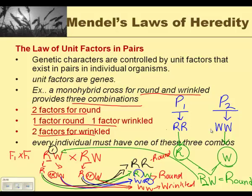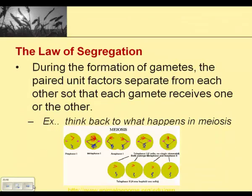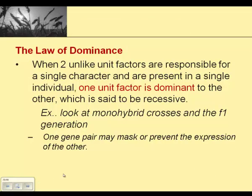As we move on to the next slide, we have the law of dominance. The law of dominance is when two unlike unit factors are responsible for a single character and are present in a single individual. One unit factor is dominant to the other, which is said to be recessive. So when you had the round and the wrinkled, we talked about which one was dominant — the round will always show up.